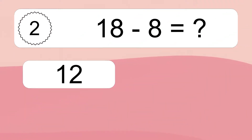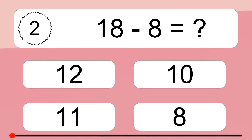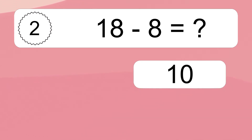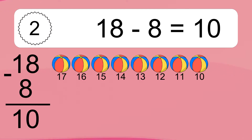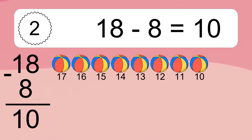18 minus 8 equals what? 18 minus 8 equals 10. Let's count it: 17, 16, 15, 14, 13, 12, 11, 10.